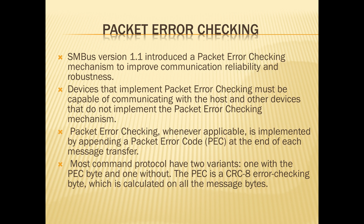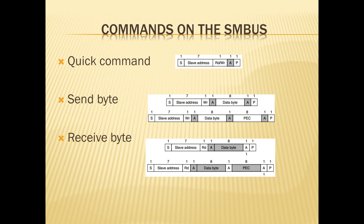Packet error checking. The SMBus version 1.1 introduced a packet error checking mechanism to improve communication reliability and robustness. Packet error checking is not implemented in all SMBus devices, but whenever it has been implemented it must be ensured that the other devices in the system are capable of communicating with the host that does not implement packet error checking. Packet error checking is implemented by appending a PEC code of 8-bit length at each end of the message transfer, as can be seen in the send byte and receive byte commands.